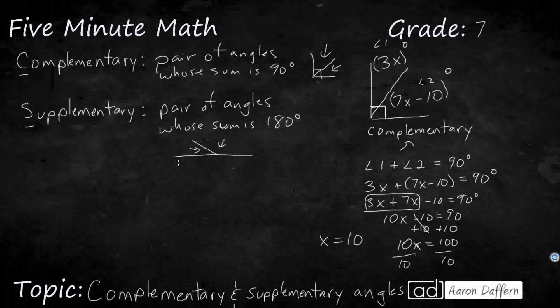And then if you want to, you can plug that back in. So this angle right here is going to be 3 times 10, so that's going to be 30 degrees. And this angle right here is 7 times 10 minus 10, so that's 70 minus 10, that's 60 degrees. And 60 and 30 make 90. Those are complementary angles.